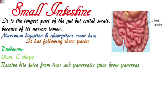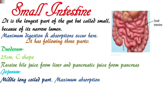The duodenum is C-shaped — imagine this pipe is C-shaped. This is the duodenum region. The small intestine here receives bile juice from the liver and pancreatic juice from the pancreas. The duodenum is the middle portion of the small intestine, and it is responsible for maximum absorption.